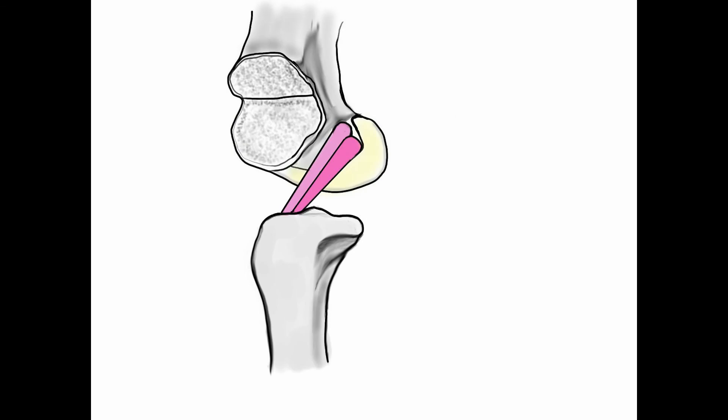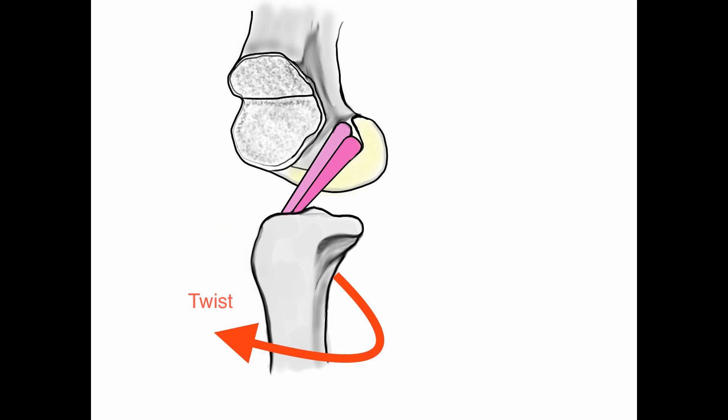We can then see what happens when we extend the knee — the relationship between the two bundles changes. The fact that an ACL has two bundles allows it to not only control shearing forces, but also twisting forces. This is a consideration for scientists and doctors in deciding how to best reconstruct this ligament.